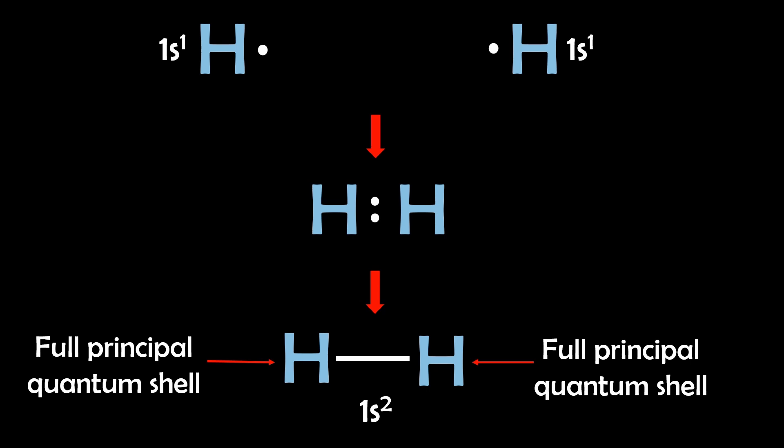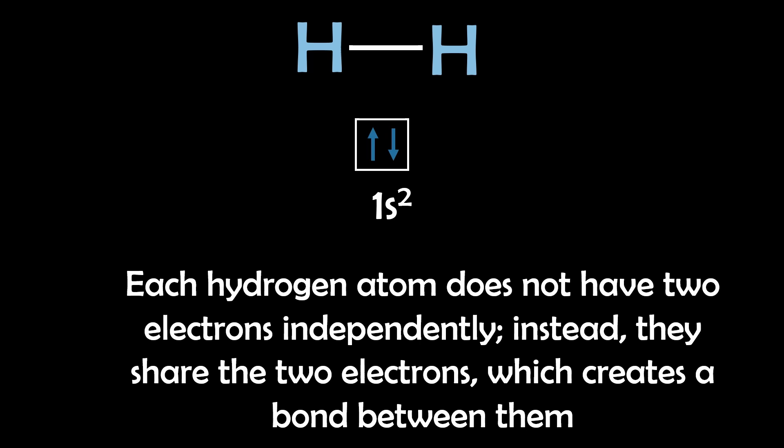But remember, 2 electrons are shared between the 2 hydrogen atoms, forming a covalent bond. So each hydrogen atom does not have 2 electrons independently, instead they share the 2 electrons, which create a bond between them.